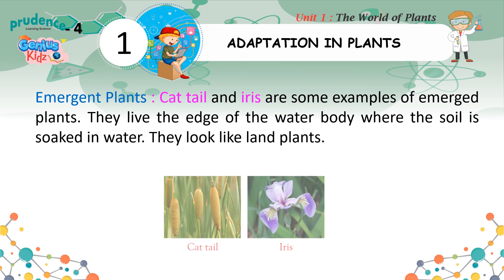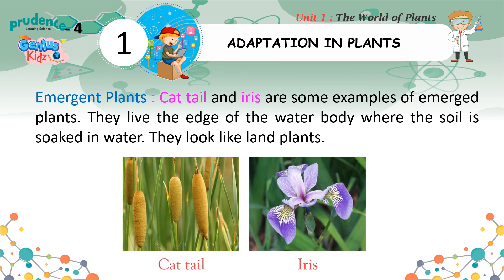Emergent plants: Cattail and iris are some examples of emergent plants. They live at the edge of the water body where the soil is soaked in water. They look like land plants.